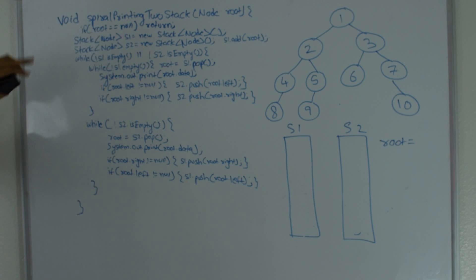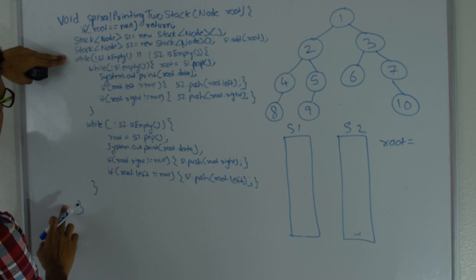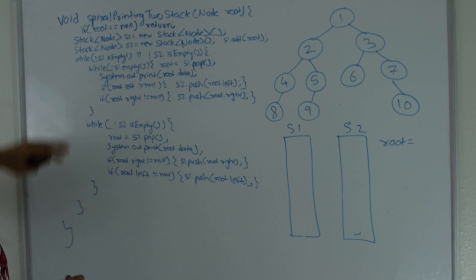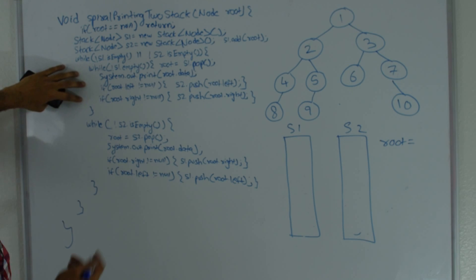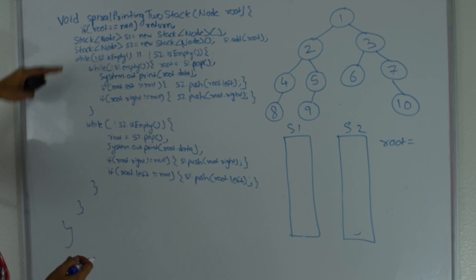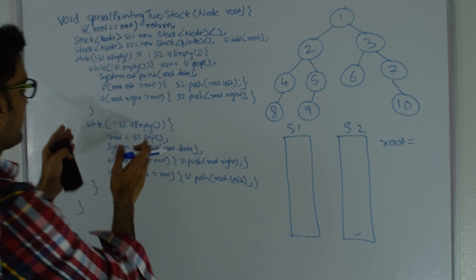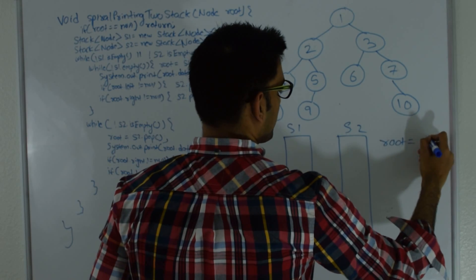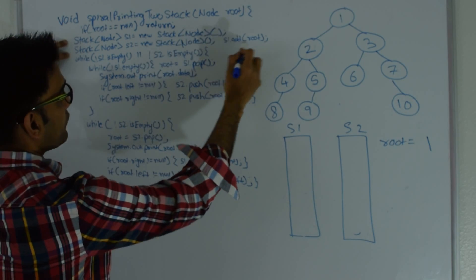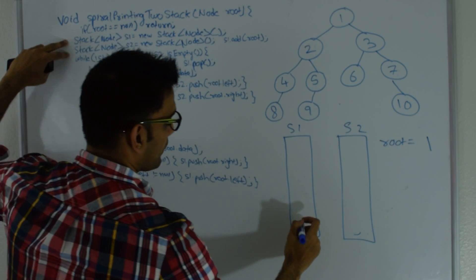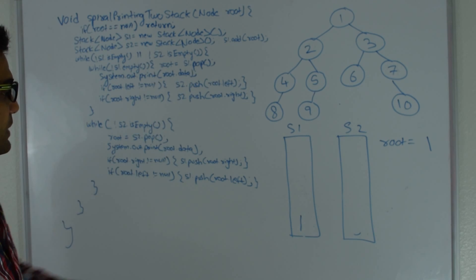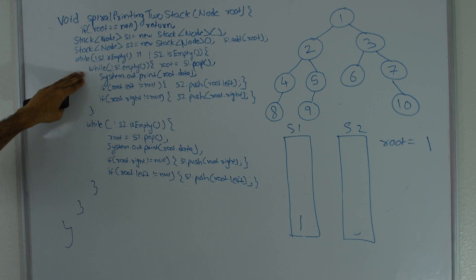Please forgive my terrible handwriting. The function is called spiral printing two stack; it takes the root of the binary tree and returns nothing. If root is null it just returns; otherwise it initializes two stacks. It stays inside the outer while loop while either stack 1 or stack 2 has elements, then an inner while loop for stack 1, and another inner while loop for stack 2.